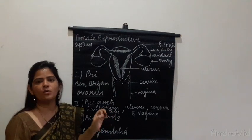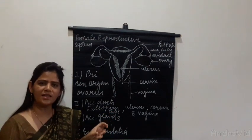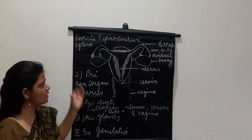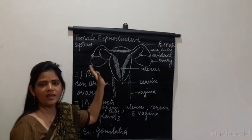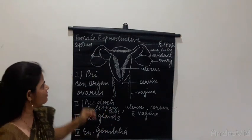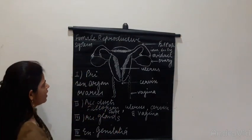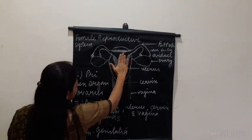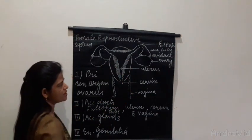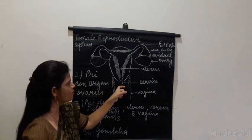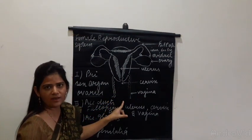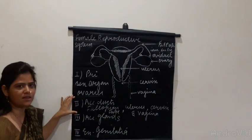This fallopian tube is also known as the oviduct, because the ovaries produce the egg and these eggs are carried to the uterus by the oviduct or fallopian tube. Next you see a pear-shaped structure here — this is the uterus. The uterus is followed by the cervix, and then this is the vagina. So these are our accessory ducts.